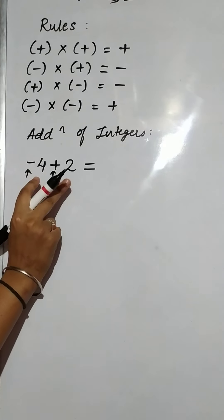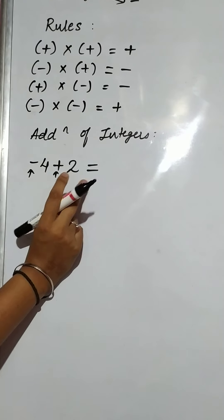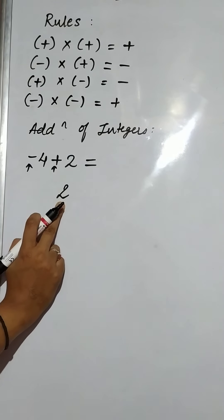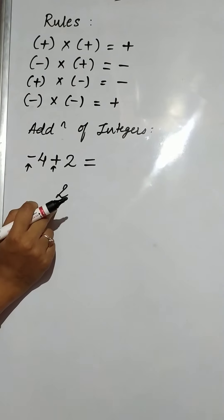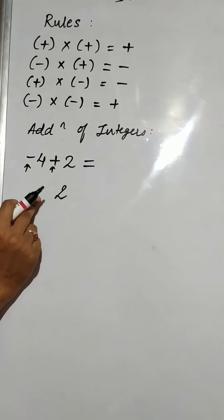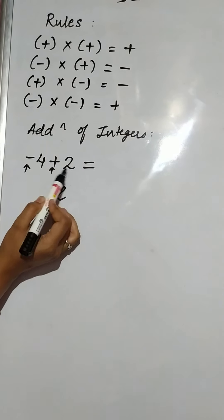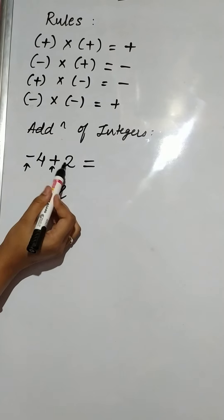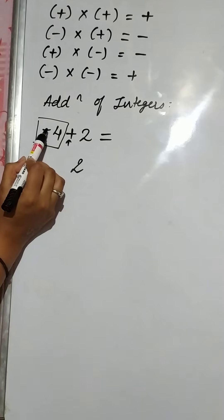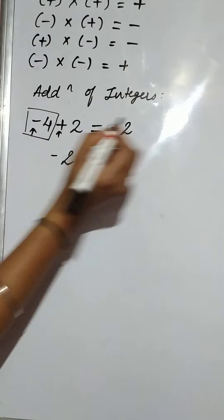So we will do subtraction of the integers. 4 minus 2 is 2. And in the answer for integer addition, we will have to write the sign before the integer — the sign of the greater number. So minus 4 and plus 2: which is the greater number? Obviously 4, and its sign is minus. So our answer is minus 2.